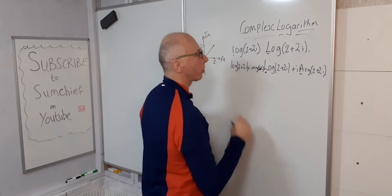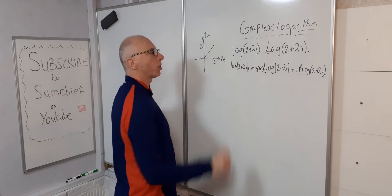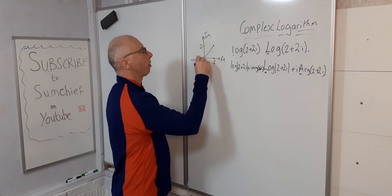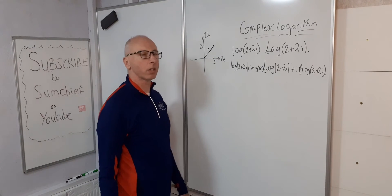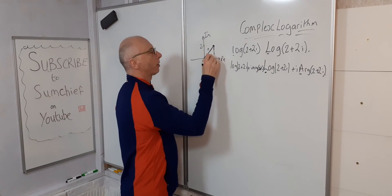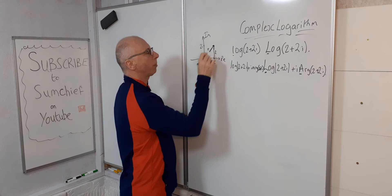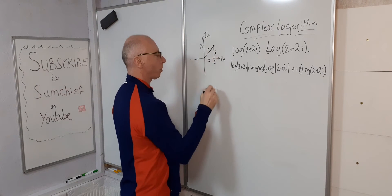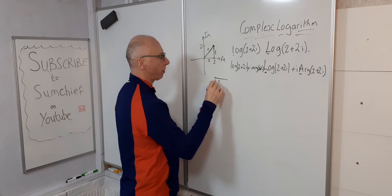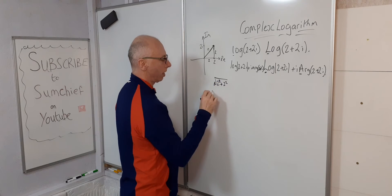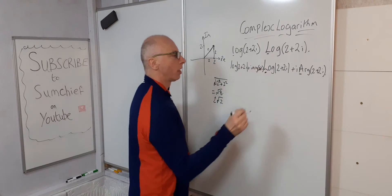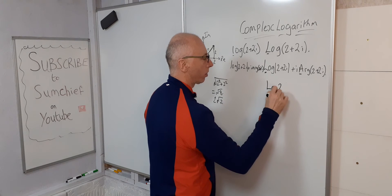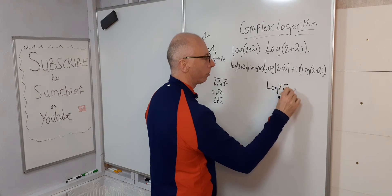So we'll carry on. Log of 2 plus 2i — what's the modulus of 2 plus 2i? We want to know what this length r is. Using Pythagoras' theorem: square root of 2 squared plus 2 squared, which is the square root of 8, or 2 root 2.